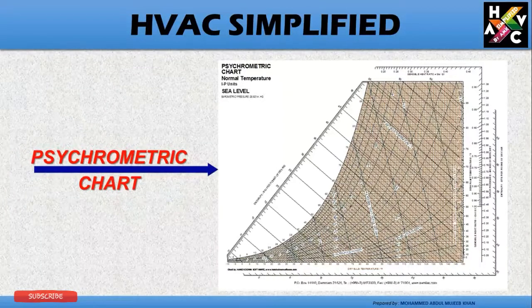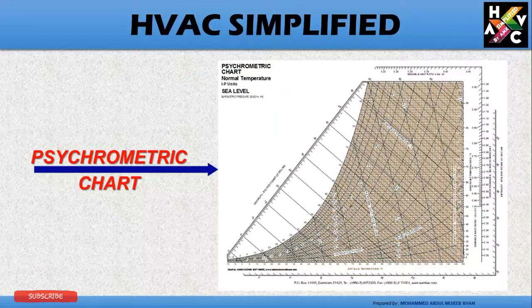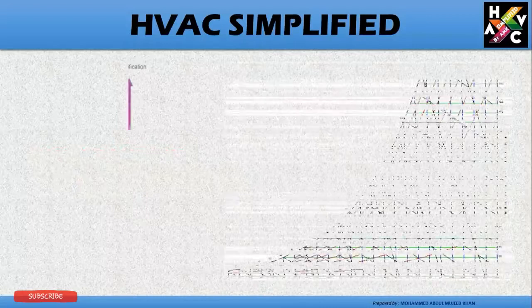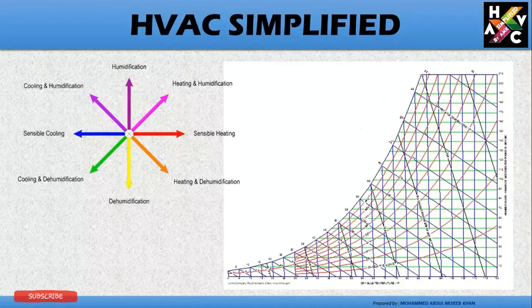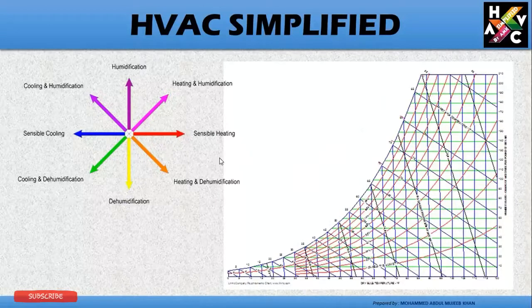This is the representation of a psychrometric chart where you can see multiple lines and values on them. We will understand all these properties one by one. The arrows here represent movement directions when we are moving on the psychrometric chart.